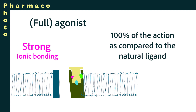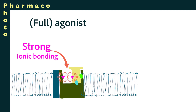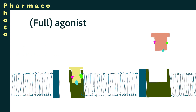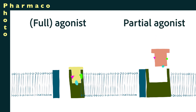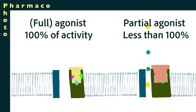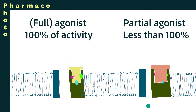A full agonist opens the gate to 100% of its capability. Notice that a strong ion bond is responsible for pulling the protein and changing it from its original structure to the new structure, resulting in the gate opening. What if a drug shaped the same way but was a little too large to allow the gate to fully open? In that hypothetical case the molecule would be a partial agonist — partial agonists don't reach 100% of the effect the natural ligand did, even if all receptors are bound.